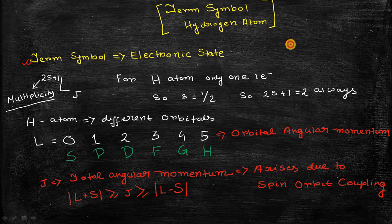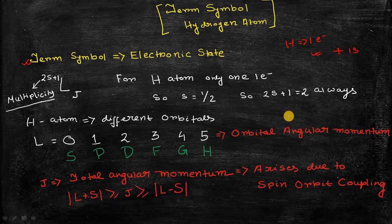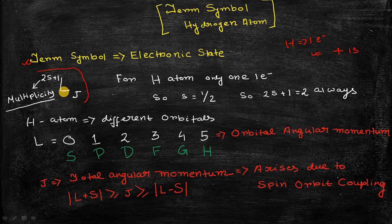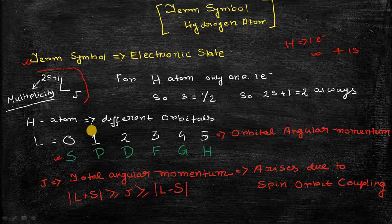In the case of hydrogen atom, as we know, it is only a single-electron system and that electron in the ground state resides in the 1s orbital. That electronic state can be represented by a term symbol. The central letter in the term symbol is L, which represents the orbital angular quantum number. If the electron is in the s orbital, you write capital S; if in the p orbital, capital P; if in the d orbital, capital D, and so on. This central letter shows which orbital the electron resides in.